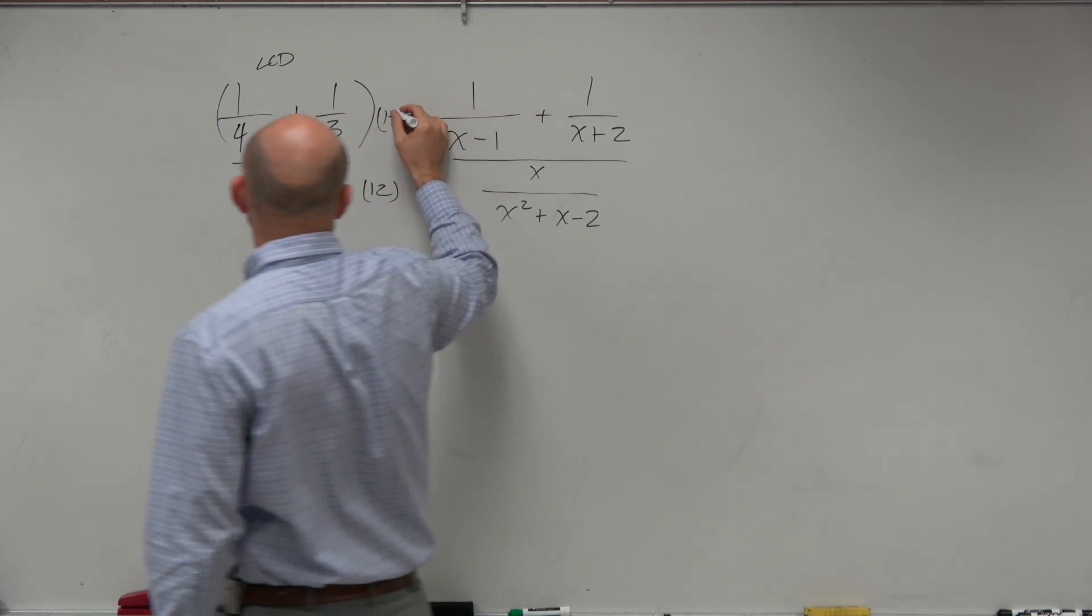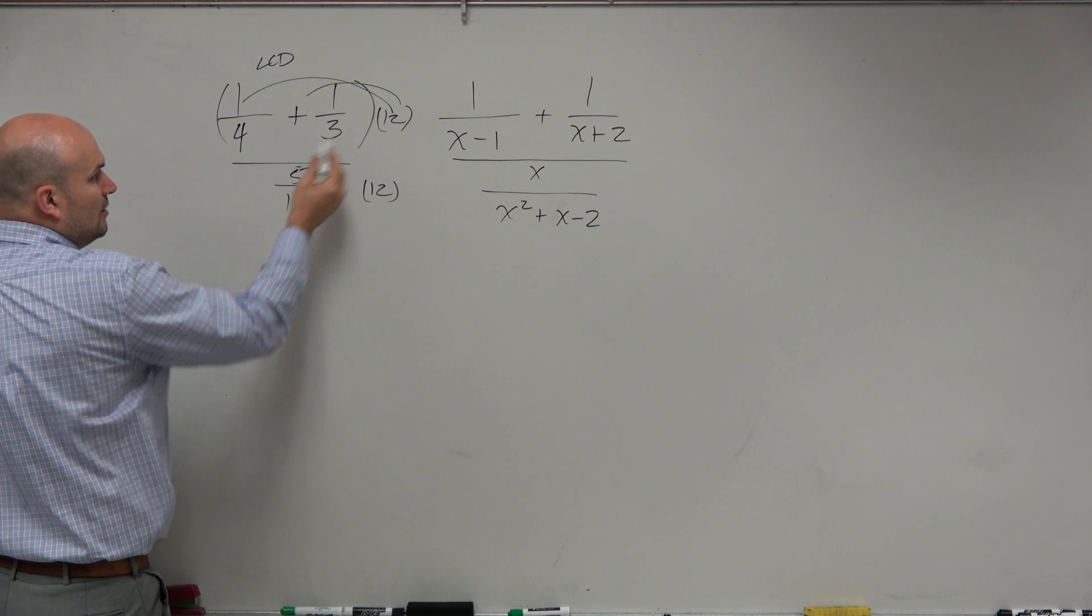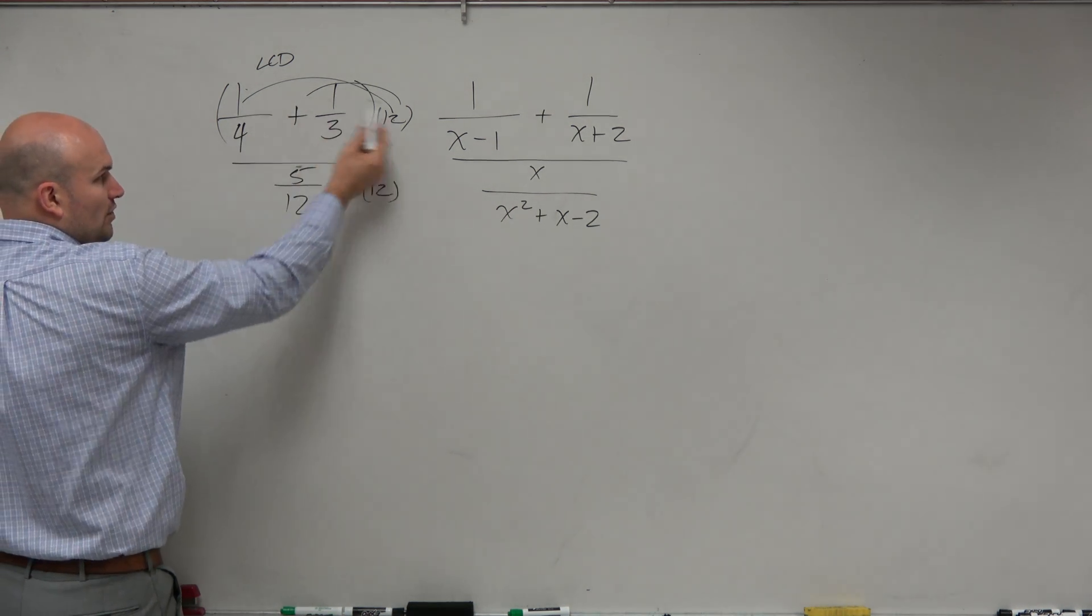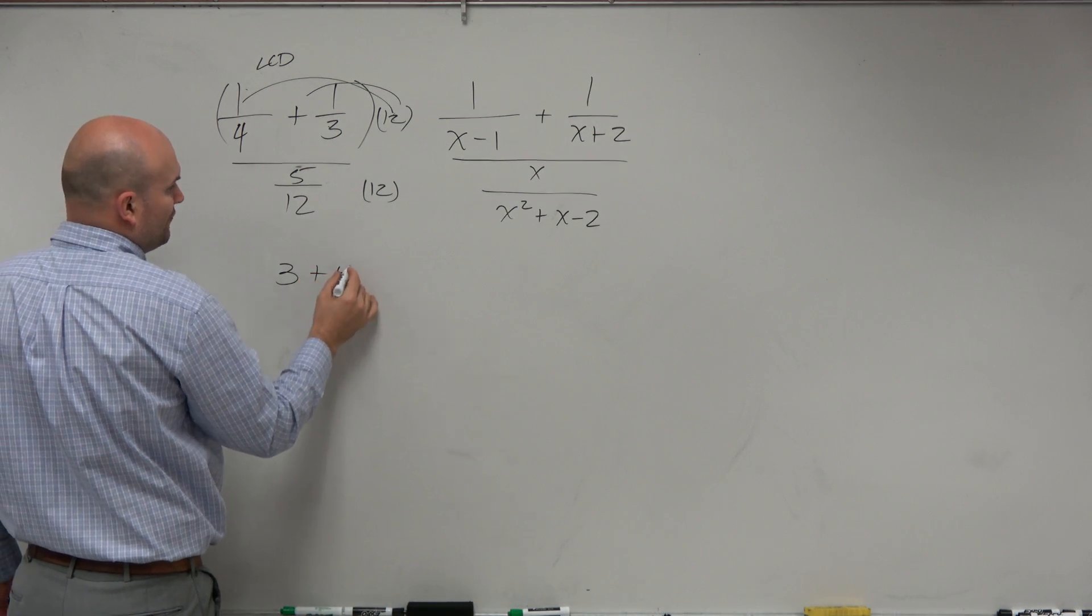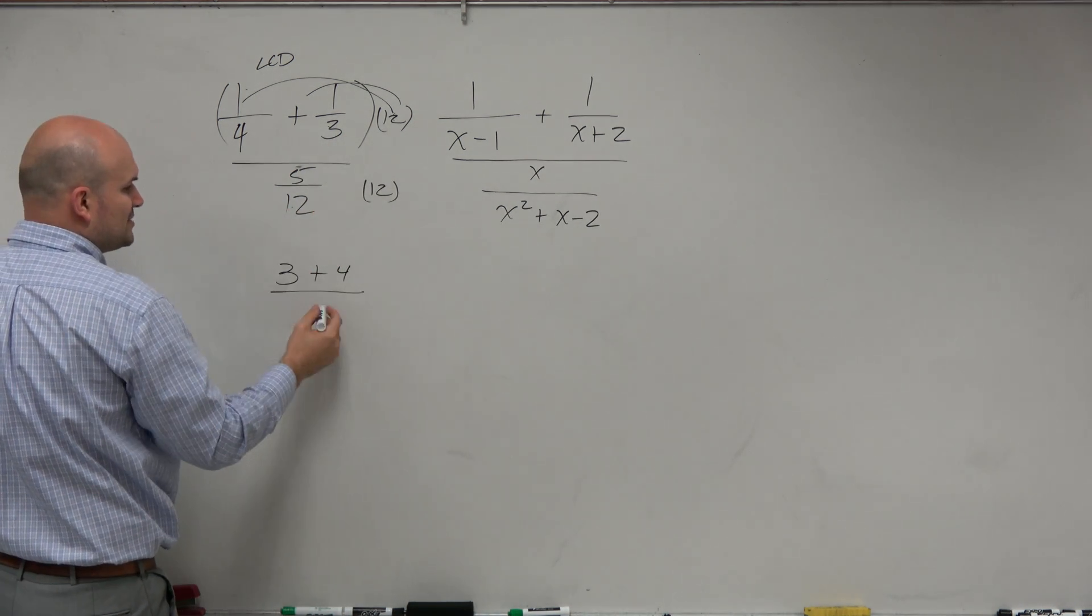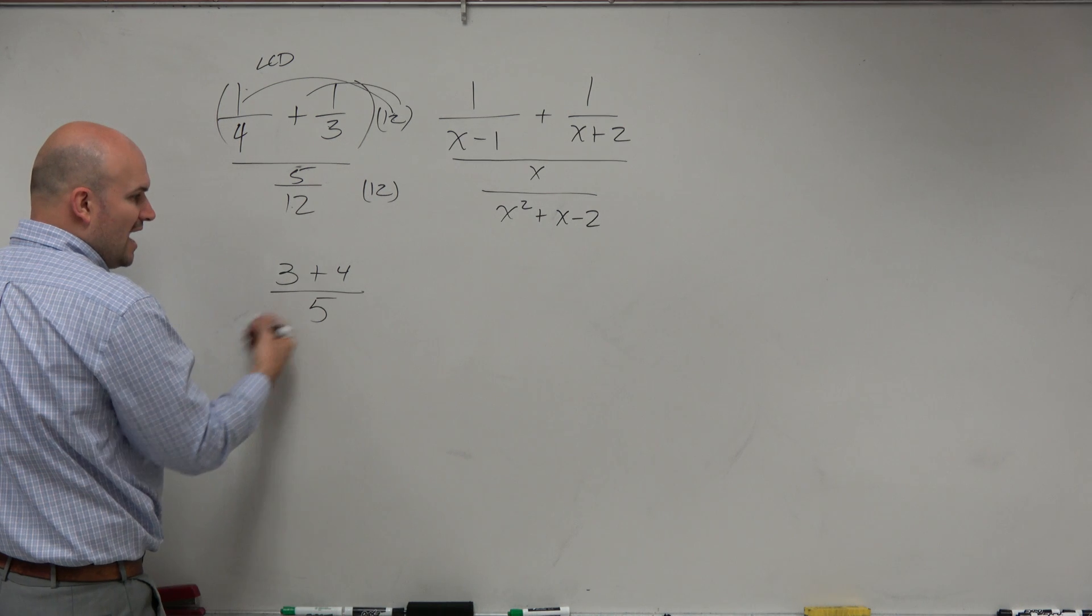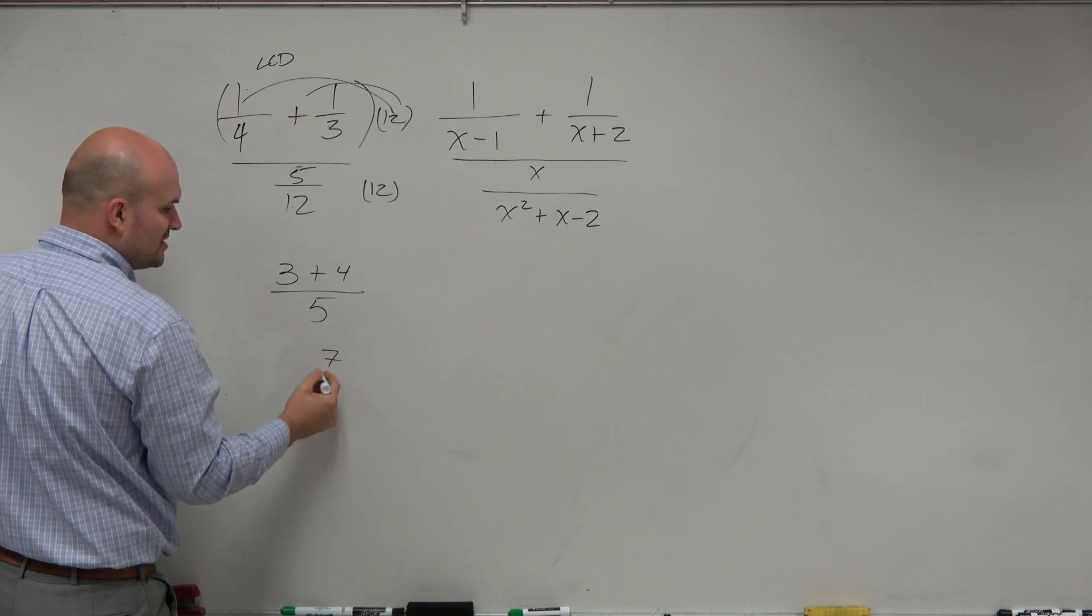But now what happens is, when I multiply everything times 12, well, 12 times 1/4, 4 goes into 12, 3 times. 3 goes into 12, 4 times. And then 12 divided by 12 is 5. So now I just have one fraction, which is 7/5.